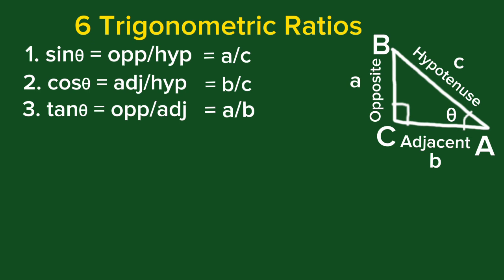These three ratios we can easily memorize by using a mnemonic device called SOH-CAH-TOA. SOH stands for sine opposite over hypotenuse, CAH stands for cosine adjacent over hypotenuse, TOA stands for tangent opposite over adjacent. That's SOH-CAH-TOA.